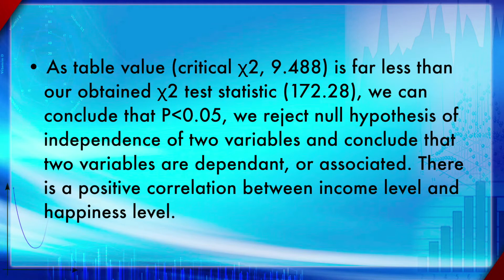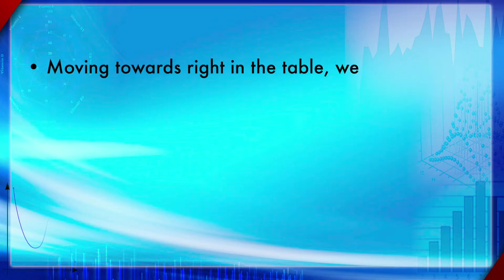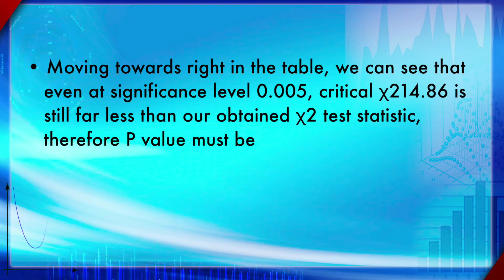Therefore, we reject the null hypothesis of independence and conclude that the two variables are dependent or associated — there is a positive correlation between income level and happiness level. Moving further right in the table, even at a significance level of 0.005 the critical chi-square value is 14.86, which is still far less than 172.28. Therefore, the p-value must be even less than 0.005. This is a handy way to estimate the p-value range manually, though the exact p-value requires software.